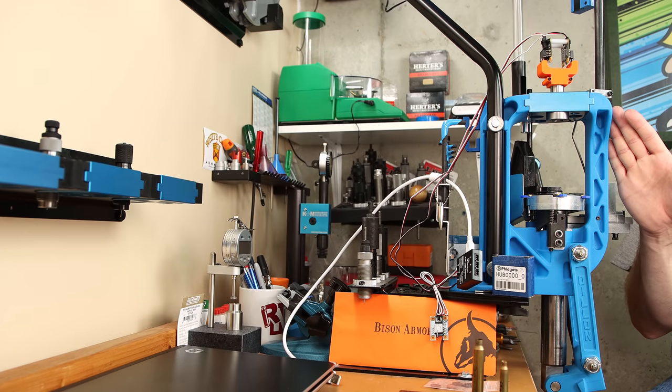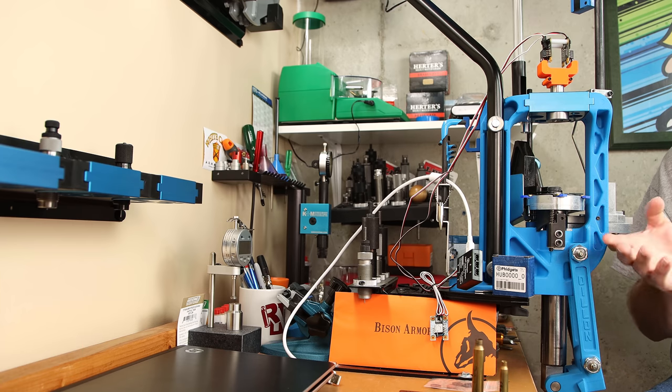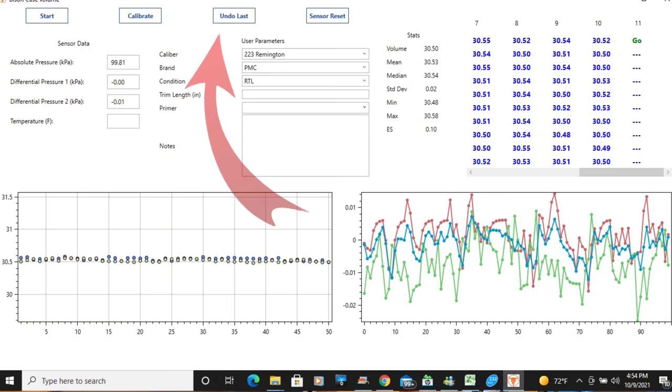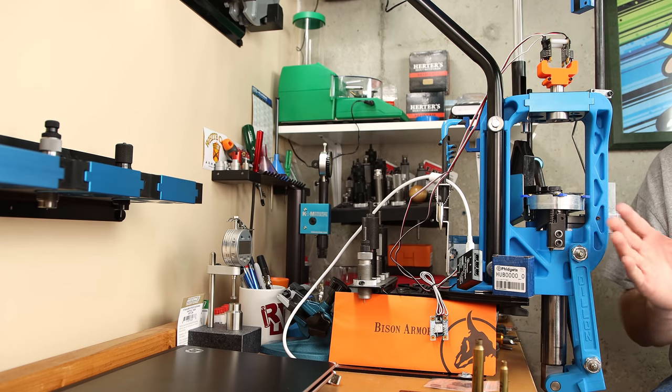Now other people that have reviewed this die have stressed that the consistency of how you pull the handle is very critical. But frankly, it hasn't been a big deal for me. And the software has an undo last button. So if you get a reading that you feel is erroneous, just undo the last and take it again. I've certainly had some variation in my press stroke, and I still haven't seen a lot of variation in the reading.